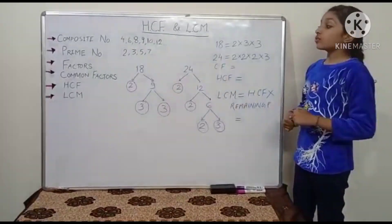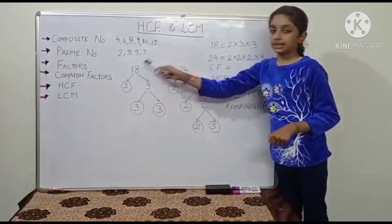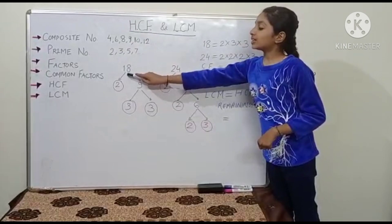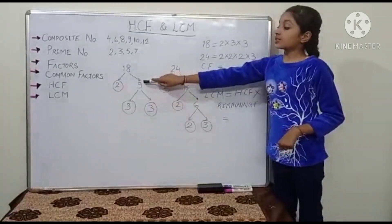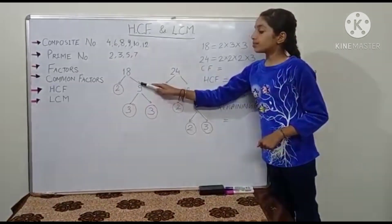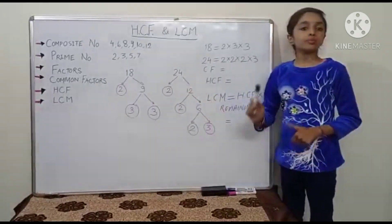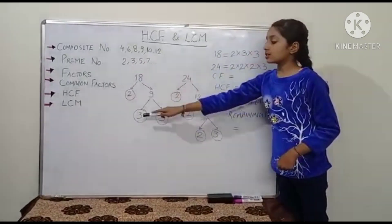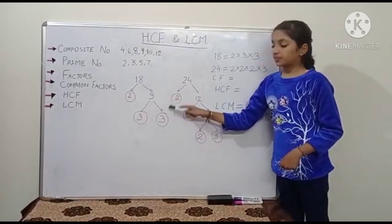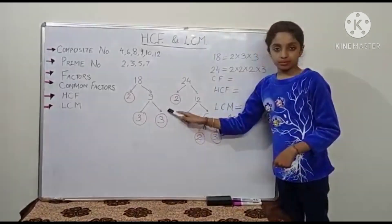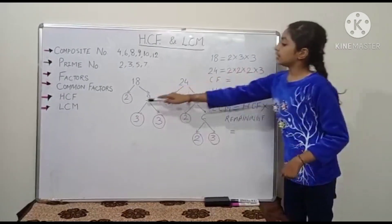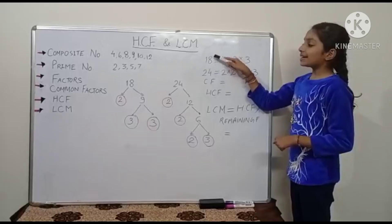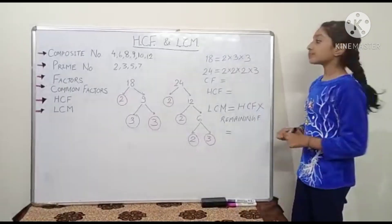Now, factors. For understanding factors, we take the number 18. We divide 18 by the smallest prime number, which is 2, and we get 9. We don't stop here because 9 is a composite number, so we divide 9 by the next smallest prime number, which is 3, and we get 3. Now we stop because we got a prime number. So the factors of 18 are 2, 3, and 3, because when we multiply these three numbers we get 18.